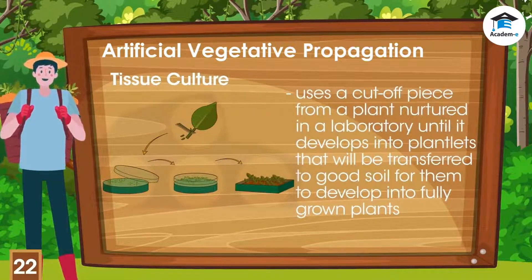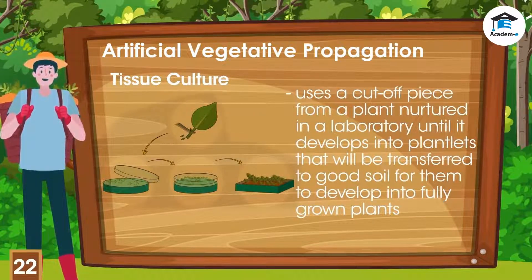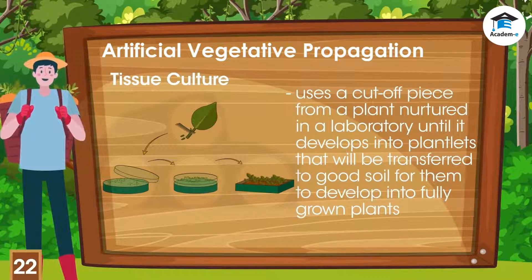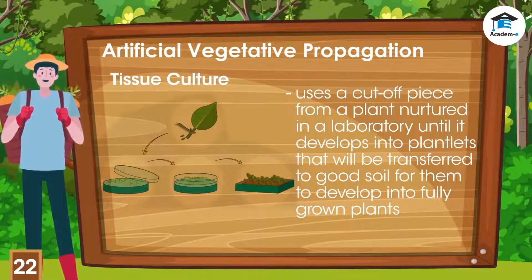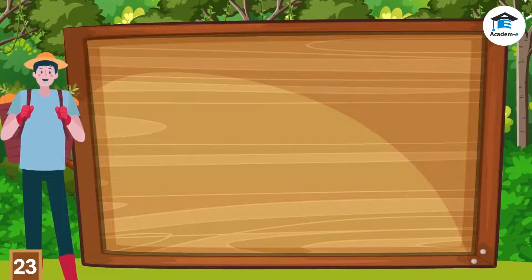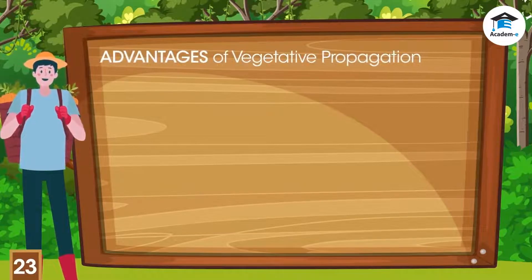Tissue culture is a modern method of reproduction which uses a cut-off piece from a plant. This piece is nurtured in a laboratory until it develops into plantlets, which are then transferred to good soil for them to develop into fully grown plants.